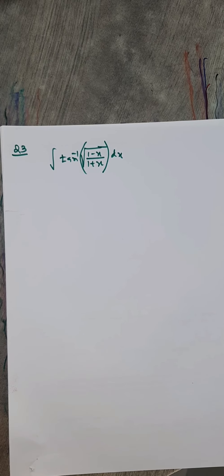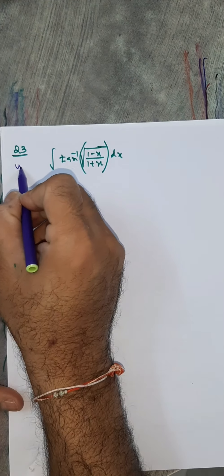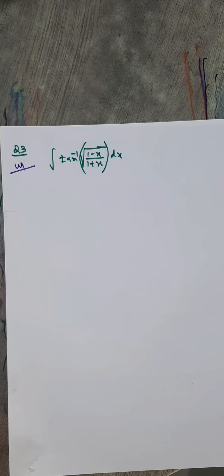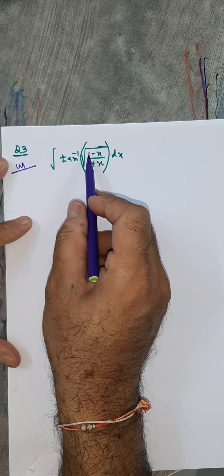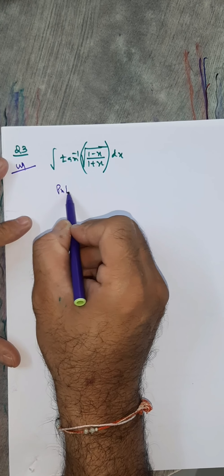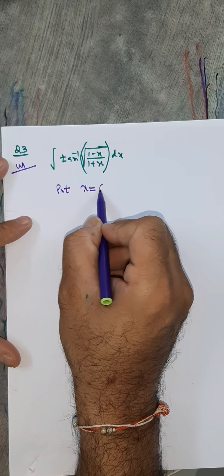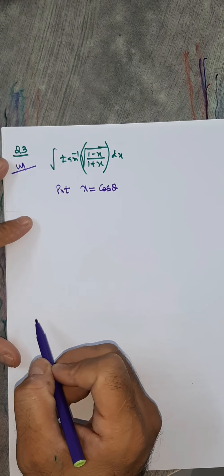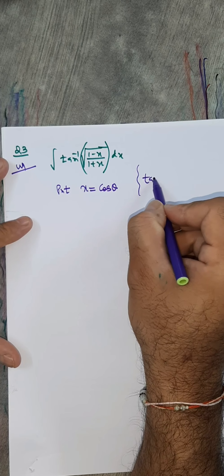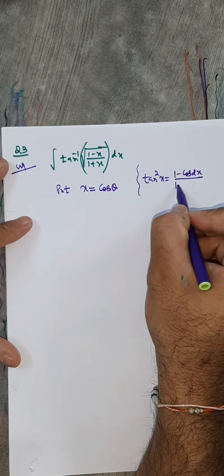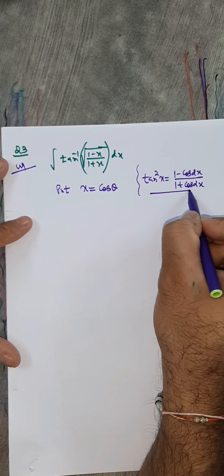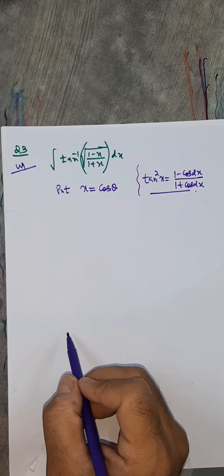Question number 23: integral of tan⁻¹√[(1−x)/(1+x)] dx. When both factors appear together, use the substitution x = cosθ. This works because (1 − cosθ)/(1 + cosθ) = tan²(θ/2), a standard identity. So dx = −sin θ dθ.